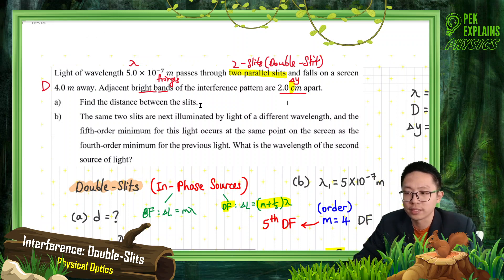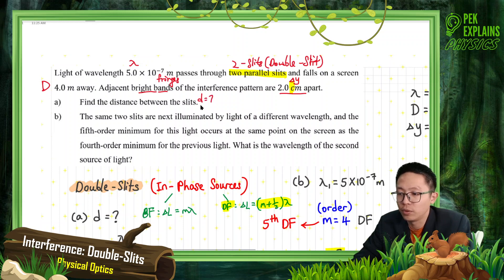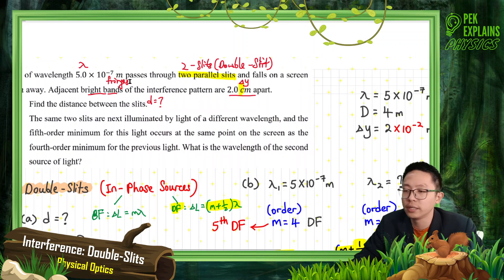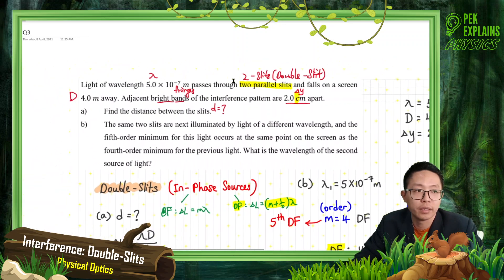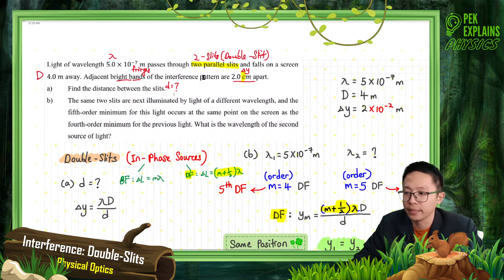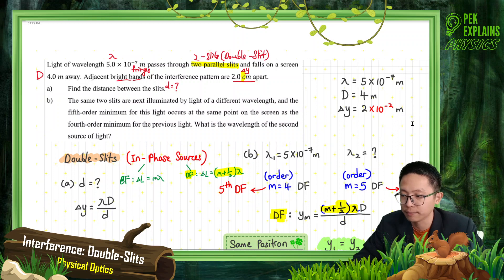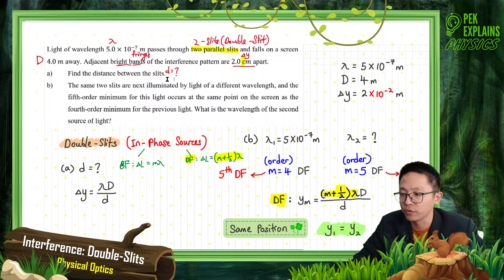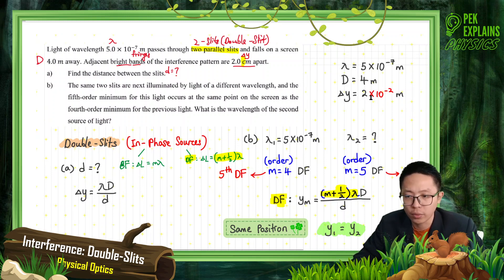Find the distance between the slits — between the two slits — meaning the separation between slits. We want to find the small d. So I've written down the information here. We have the wavelength, the big D = 4 m, and the ΔY changed to meters. Since it's double slit with in-phase source and we already have the ΔY value, just use the formula ΔY = λD/d.